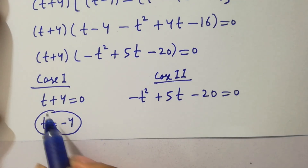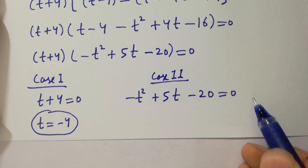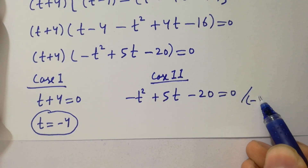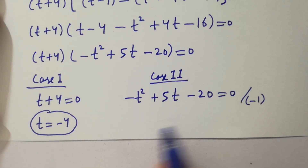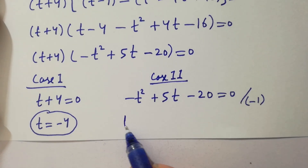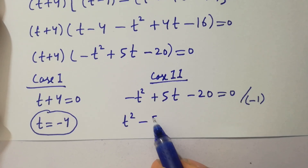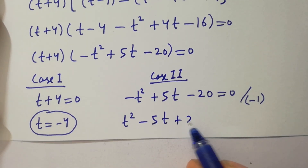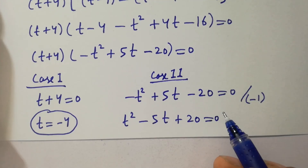From case one, the real solution is t equals negative 4. For case two, we divide by minus 1. Applying the sign changes — minus becomes plus — we get t squared minus 5t plus 20 equals 0, which is our quadratic equation.